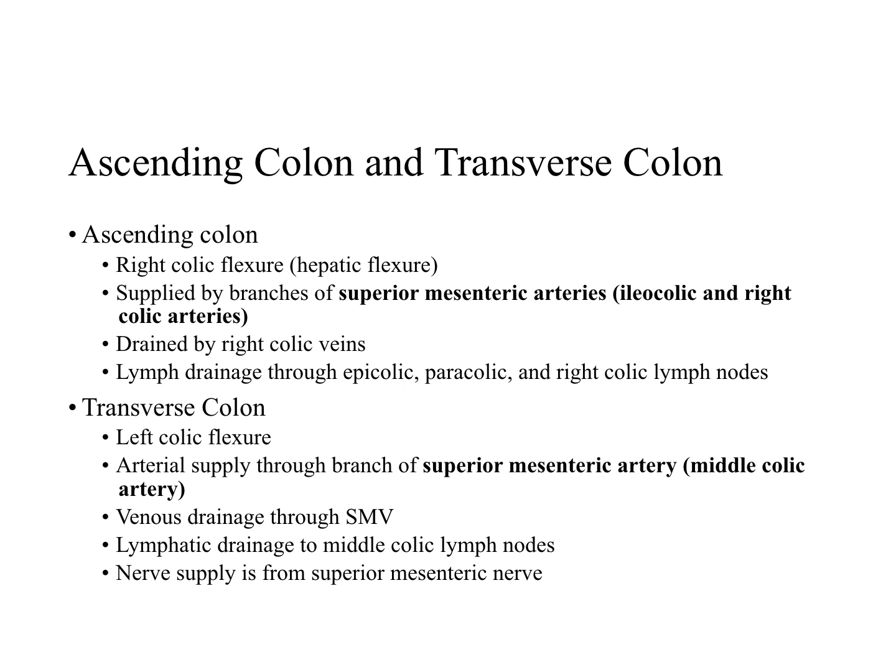The arterial supply of the transverse colon is mainly from the middle colic artery, which is a branch of the superior mesenteric artery. Venous drainage is through the superior mesenteric vein. Lymphatic drainage is to the middle colic lymph nodes, which in turn drain to the superior mesenteric lymph nodes.